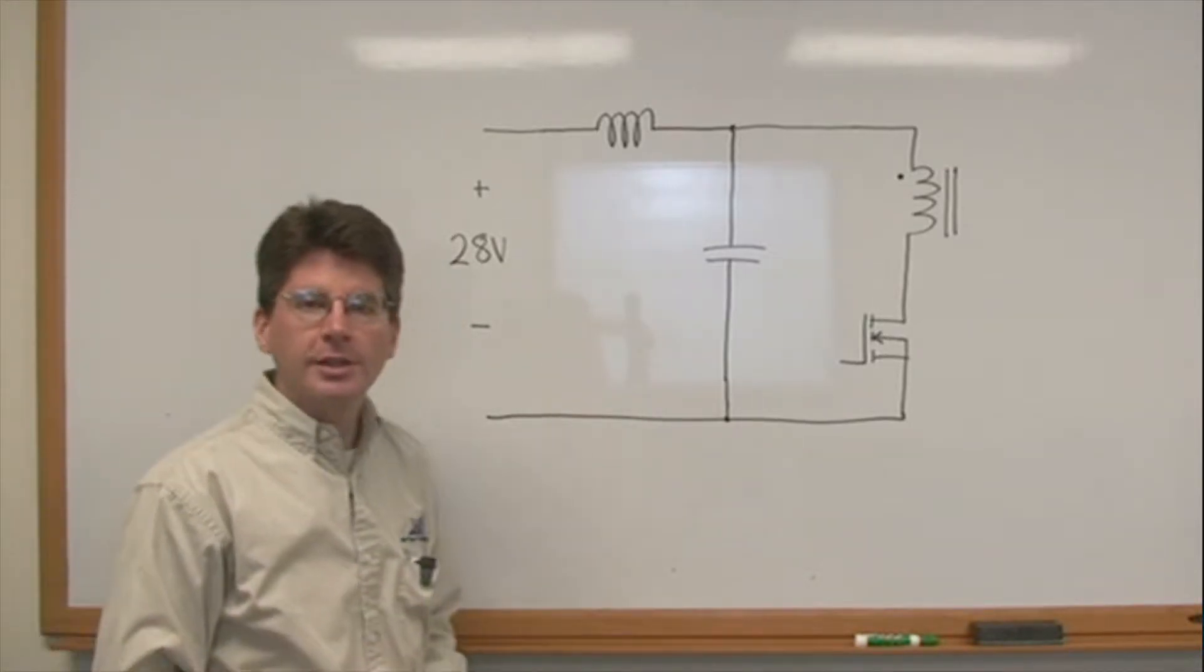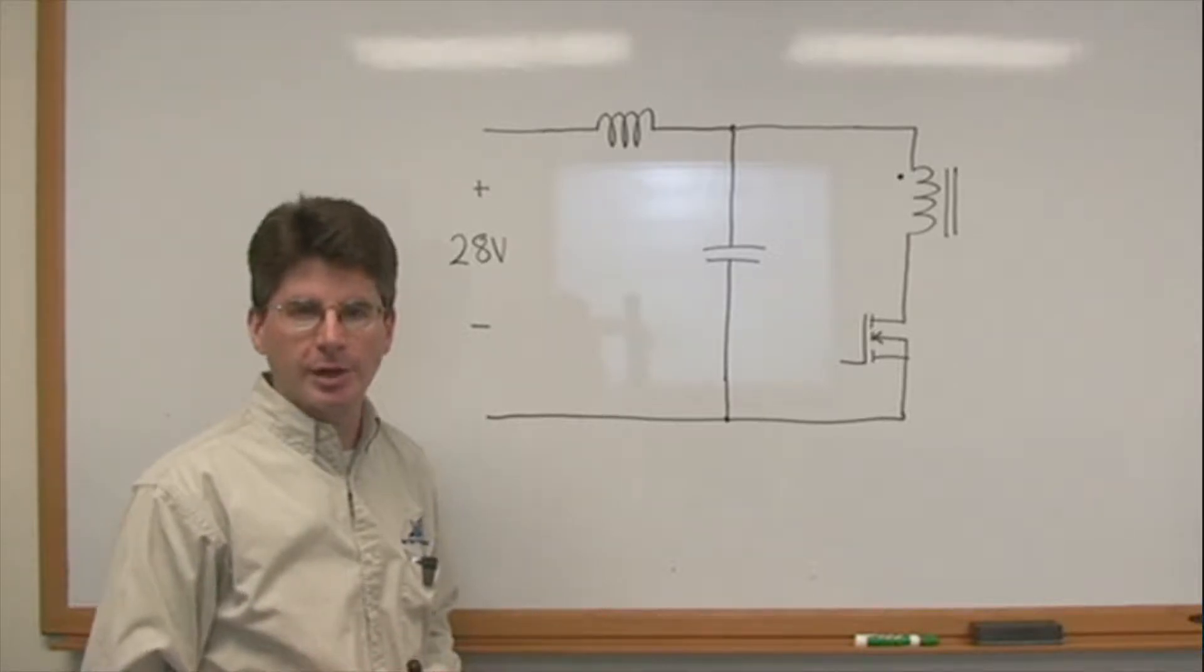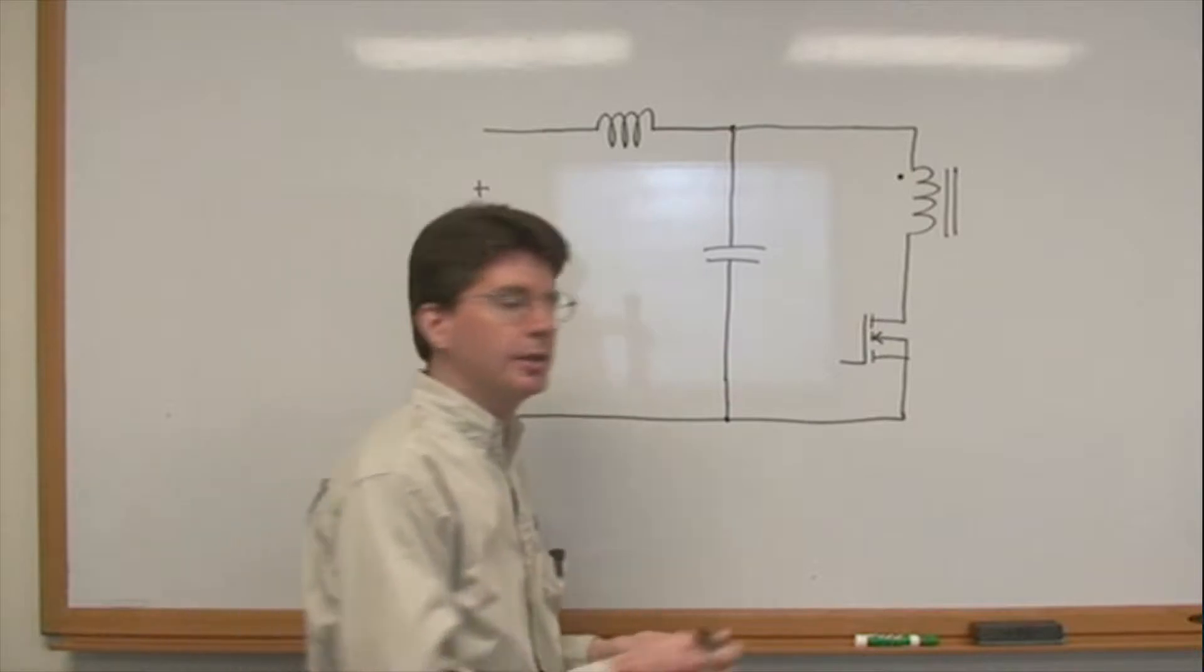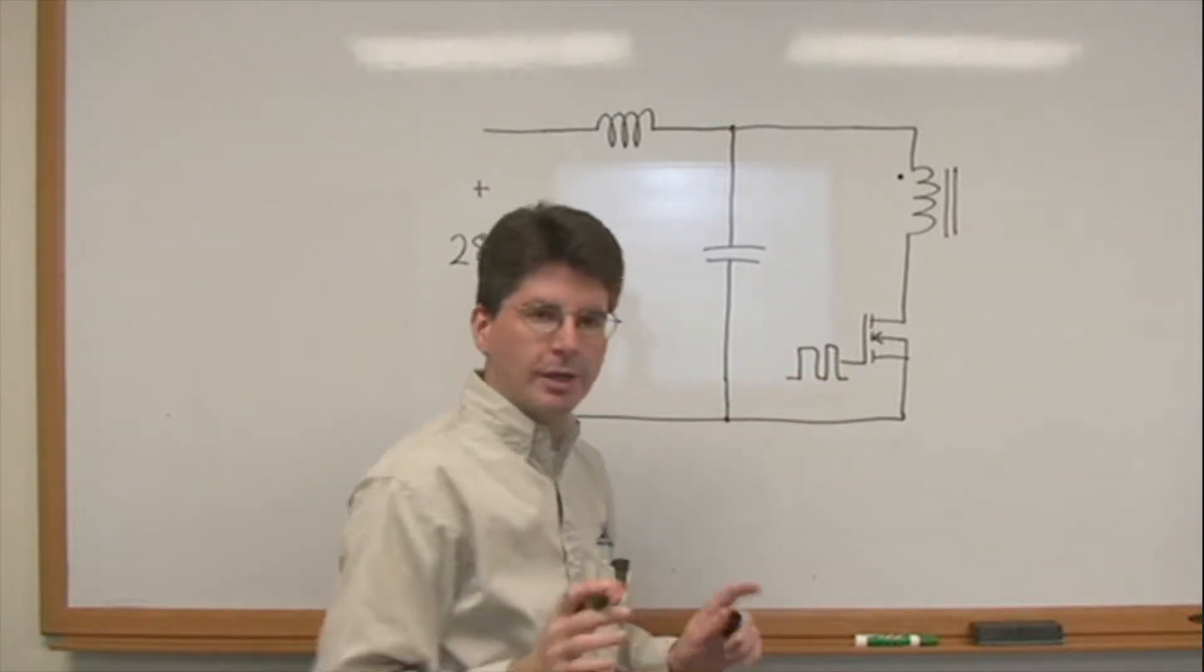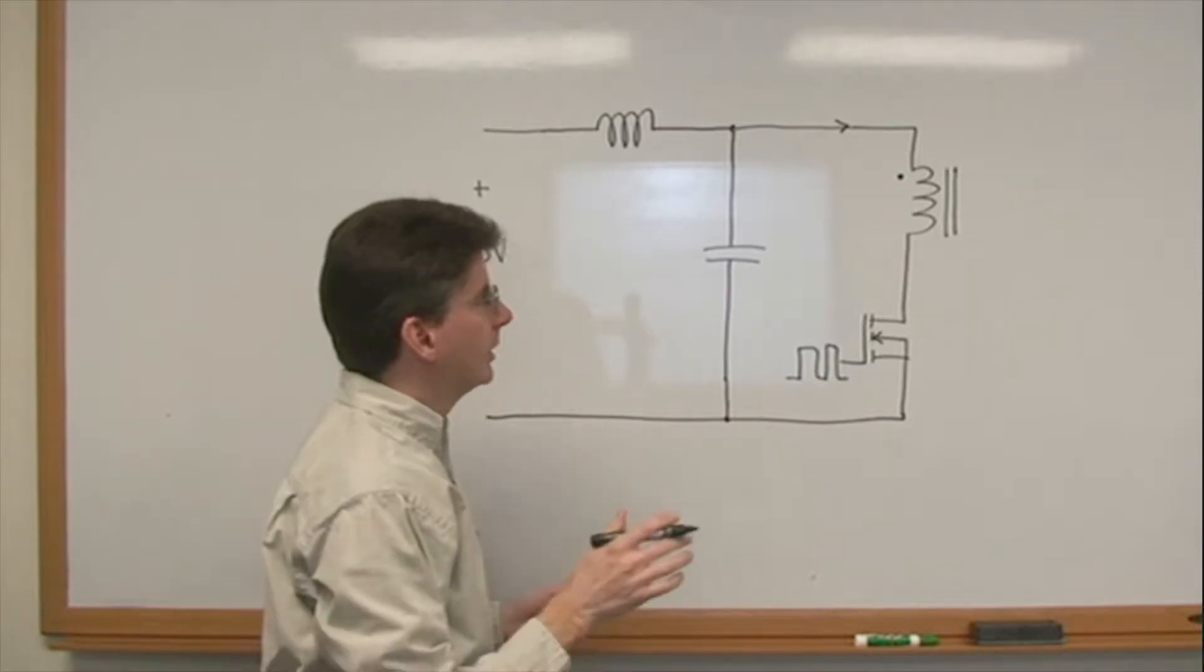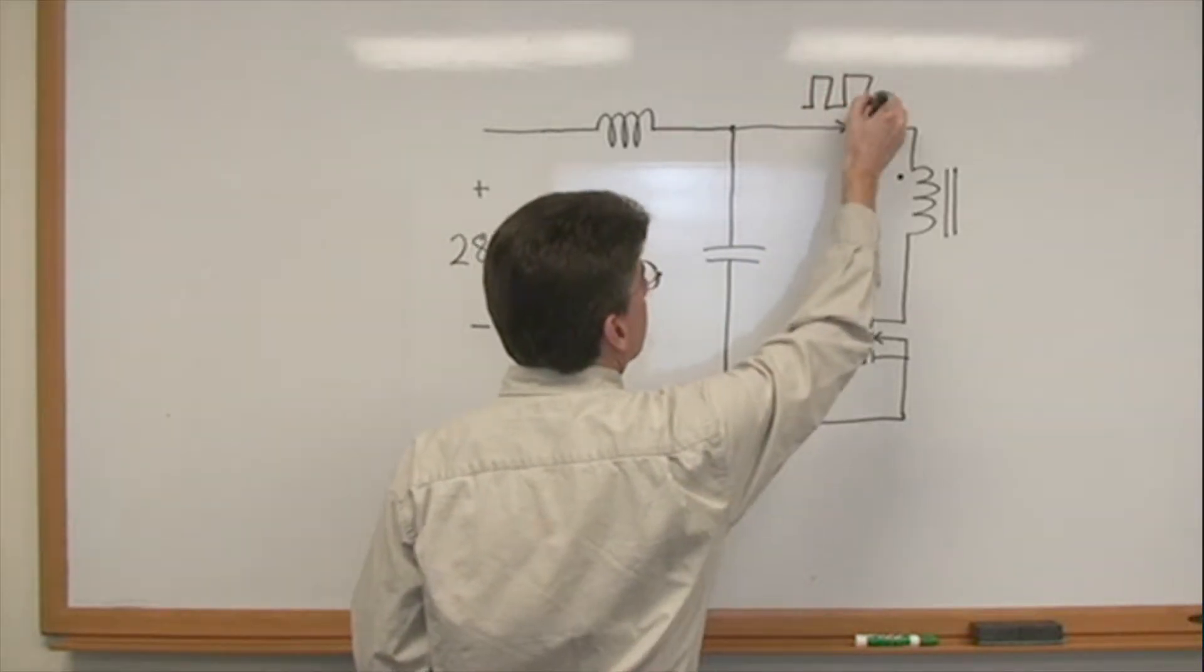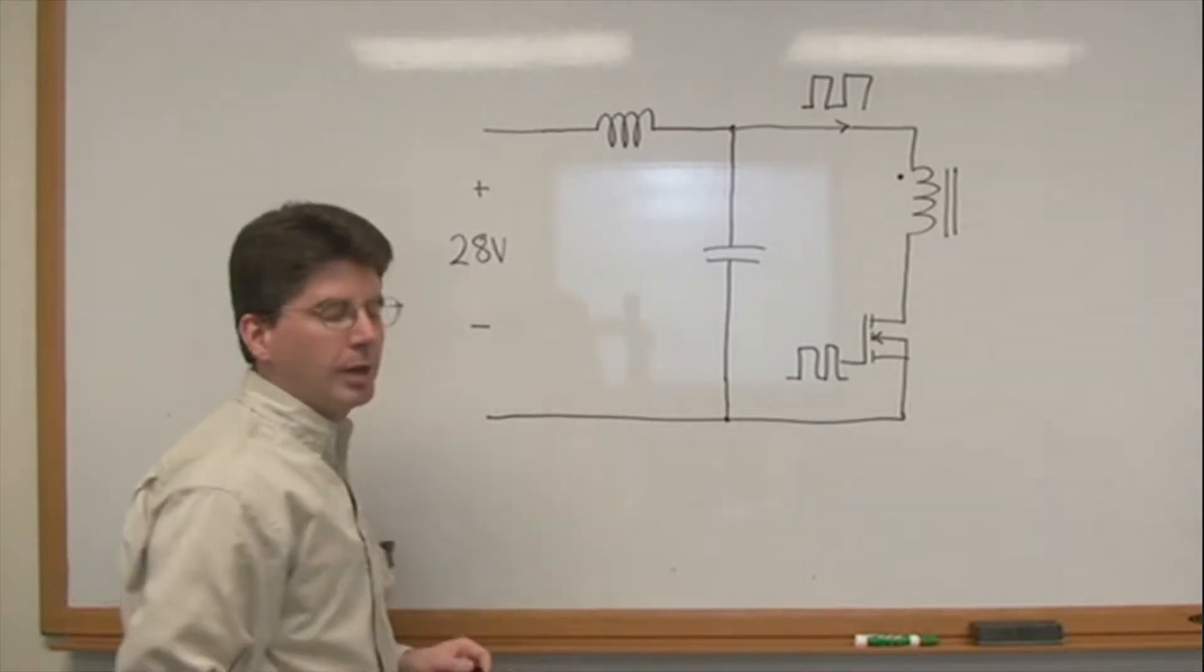Drawn here we show a basic switching topology used in any switching power supply. This is the MOSFET which will be driven in some kind of on-off controlled manner and a transformer, and this current will be a pulsing current.